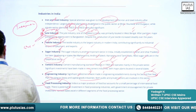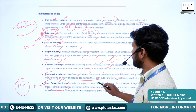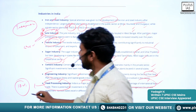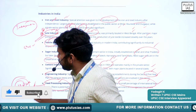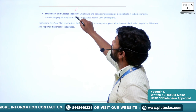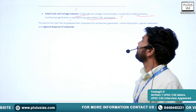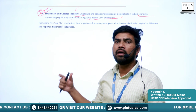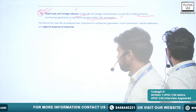The food processing industry is also important — currently, only about 10 to 12 percent of food produced in India undergoes processing, and India's contribution internationally is small. There is a lot of scope for developing this sector further. Small scale and cottage industries play a crucial role in India's economy, contributing significantly to manufacturing value added, GDP, and exports. We will understand more about these when we study the MSME sector.